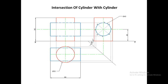So we have completed the front view, top view, and side view of the vertical cylinder in step one, and in step two the side view, top view, and front view of the horizontal cylinder. In the previous step we marked the points of intersection — points 1 to 8 — where the horizontal cylinder cuts the vertical cylinder. Now we need to project these points into the top view and front view to draw the curves of intersection.